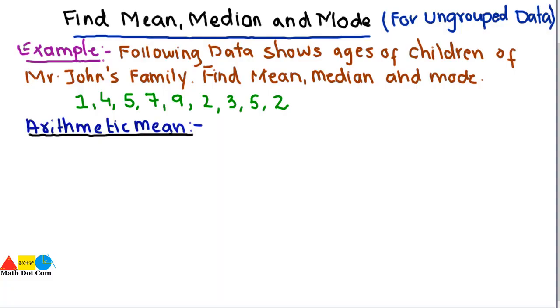In our previous lectures we have seen how you can find the mean, median, and mode for ungrouped data separately. Today I will show how you can find the mean, median, and mode all together by using one example.